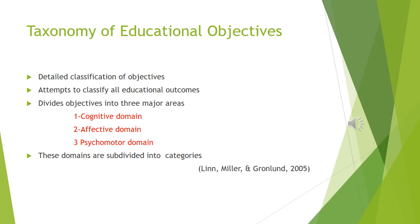Taxonomy of Educational Objectives. Dear students, in our previous lecture we discussed that educational objectives form the basis of assessment. It is very important to understand this classification system, as without being aware of this vital information, you cannot assess your students accurately. Taxonomy of Educational Objectives is a detailed classification of objectives. It attempts to identify and classify all educational outcomes. The system first divides objectives into three areas: cognitive domain, affective domain, and psychomotor domain. Each of the three domains is subdivided into categories.